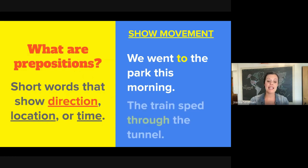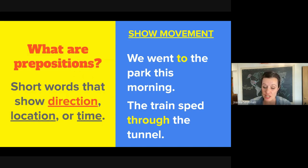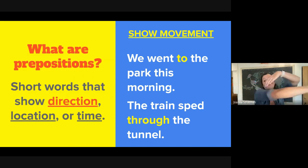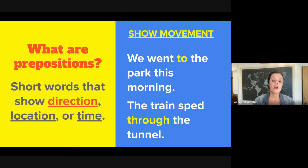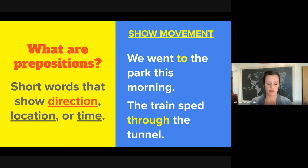So, "we went to the park this morning" shows movement between where we started and the park. In a similar way, "the train sped through the tunnel" shows the direction in which the train is speeding — it's moving through the tunnel. These are some common movement or direction prepositions.